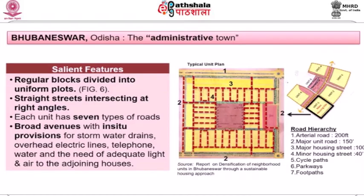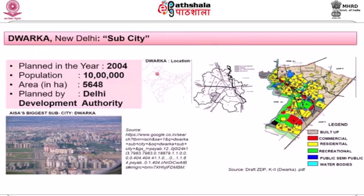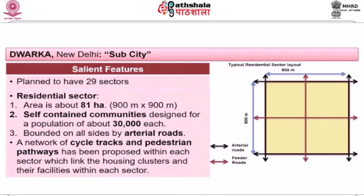The next case study is Dwarka, which is in New Delhi. Dwarka was planned as a sub-city in the year 2004 for a population of 10 lakhs, with an area of 5,648 hectares in the southwest part of Delhi. It was planned by the Delhi Development Authority with a team of eminent experts and academicians from various disciplines.